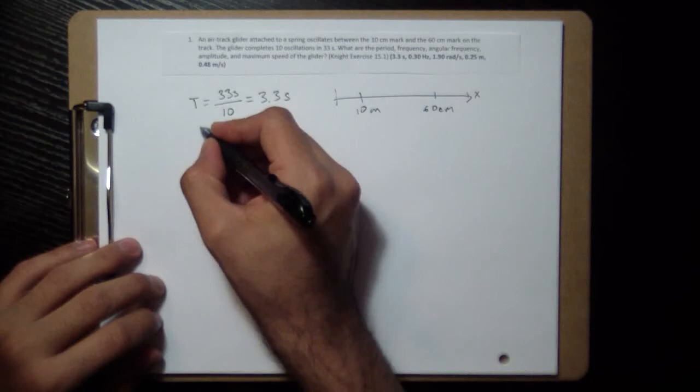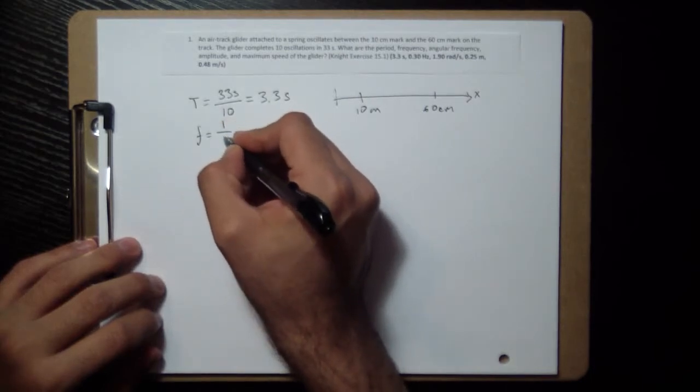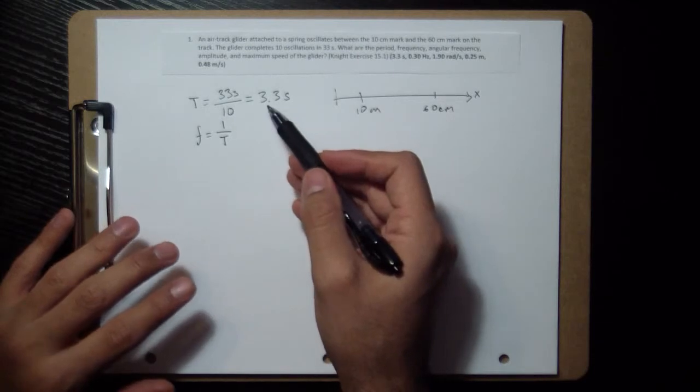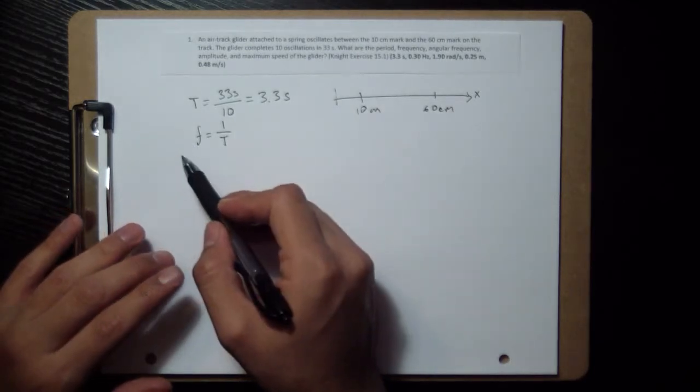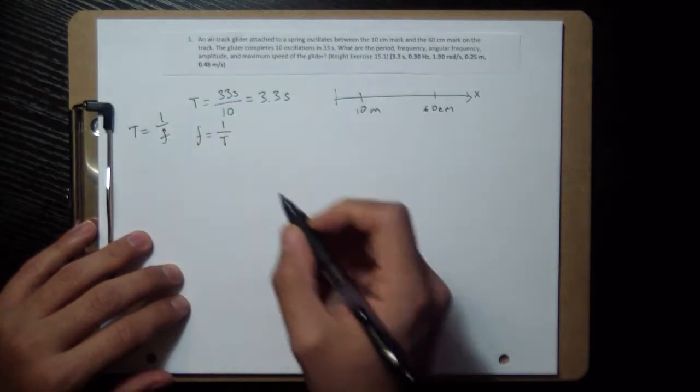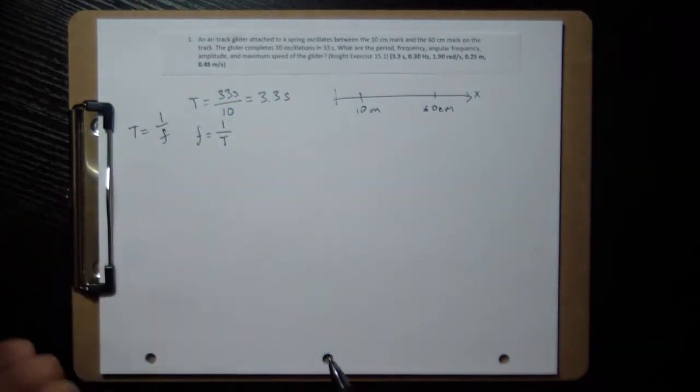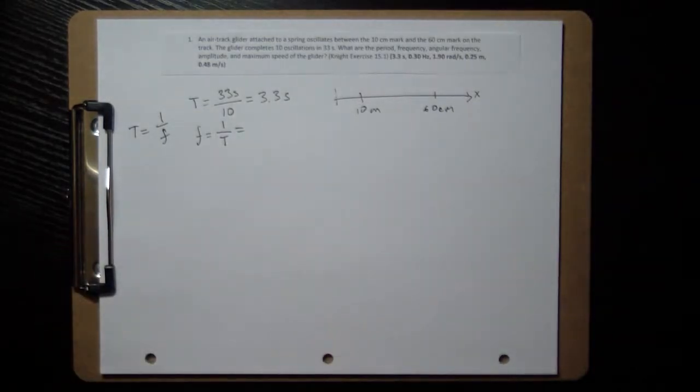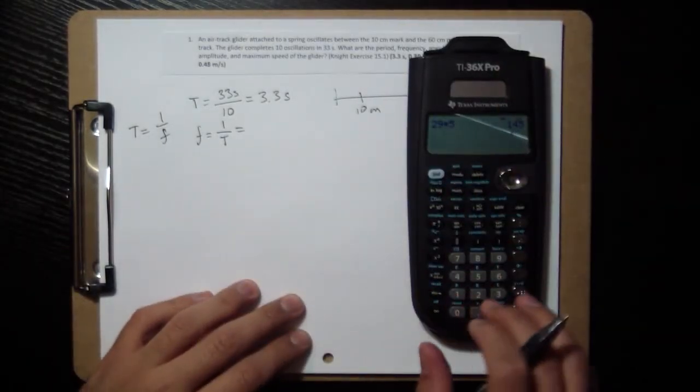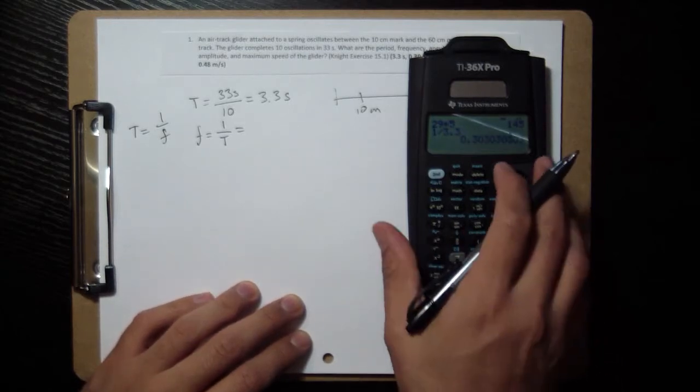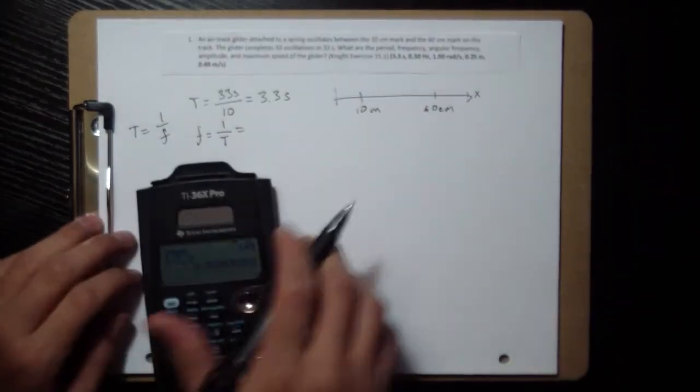The frequency is the inverse of the period. So if you have the period, then you can go one over the period to get the frequency. And similarly, if you wanted to know the period but you knew the frequency, you would just take that reciprocal or the inverse. So one over 3.3 is 0.303, 0.30.